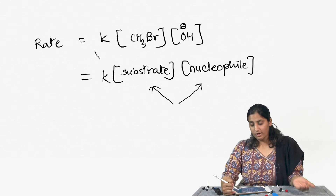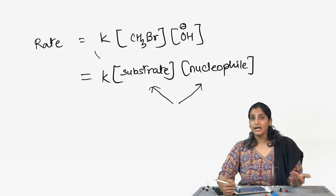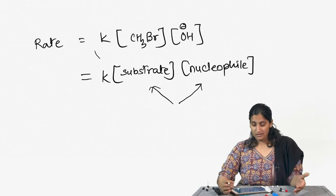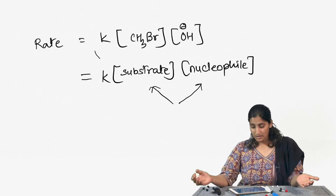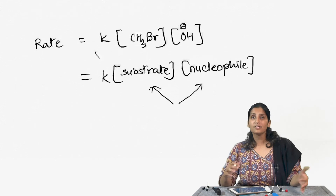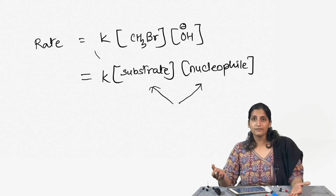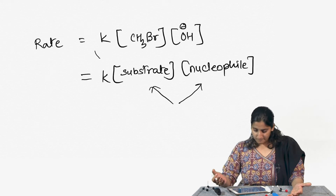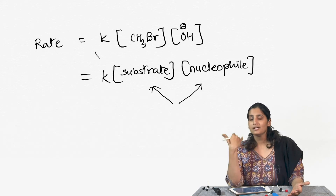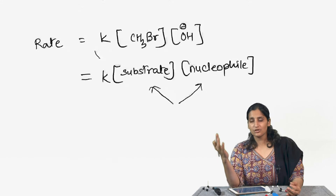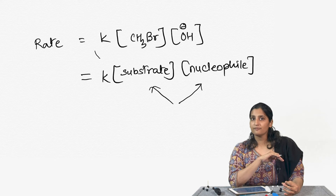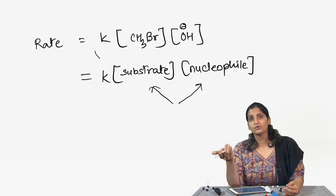If I increase the concentration of hydroxide and double it, the rate of the reaction will also be doubled. If I double the concentration of substrate, the rate will also be doubled. If I double the concentration of both substrate and nucleophile, the rate will be quadrupled. In contrast to SN1, where increasing nucleophile concentration had no effect on rate, in SN2 the nucleophile's concentration does play a role.